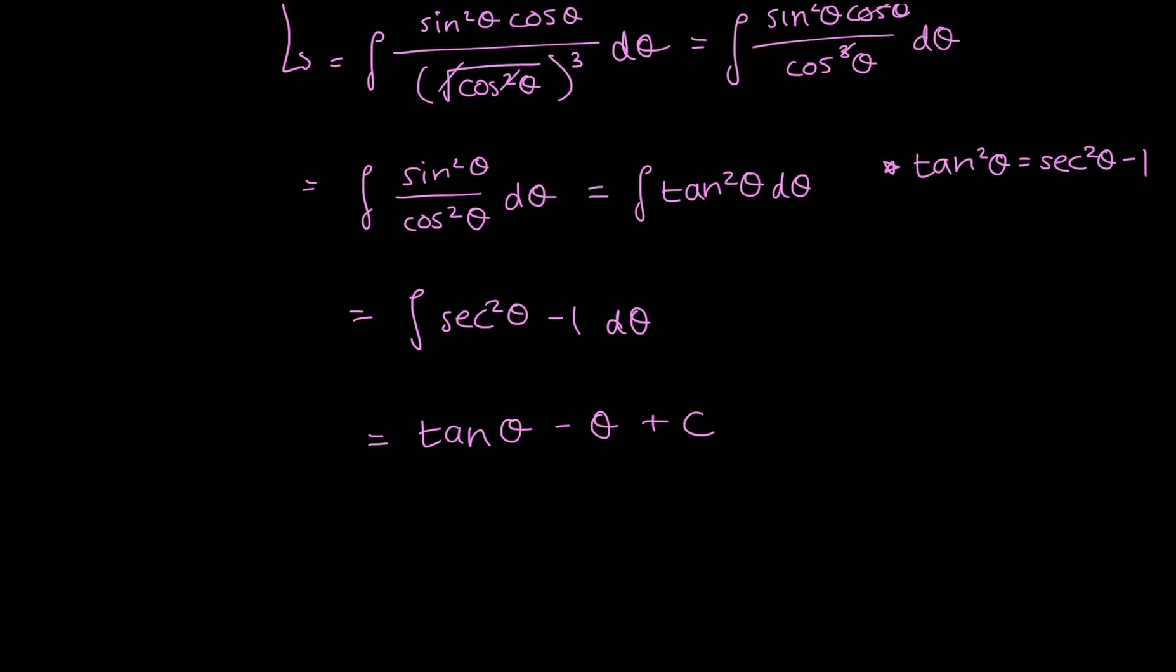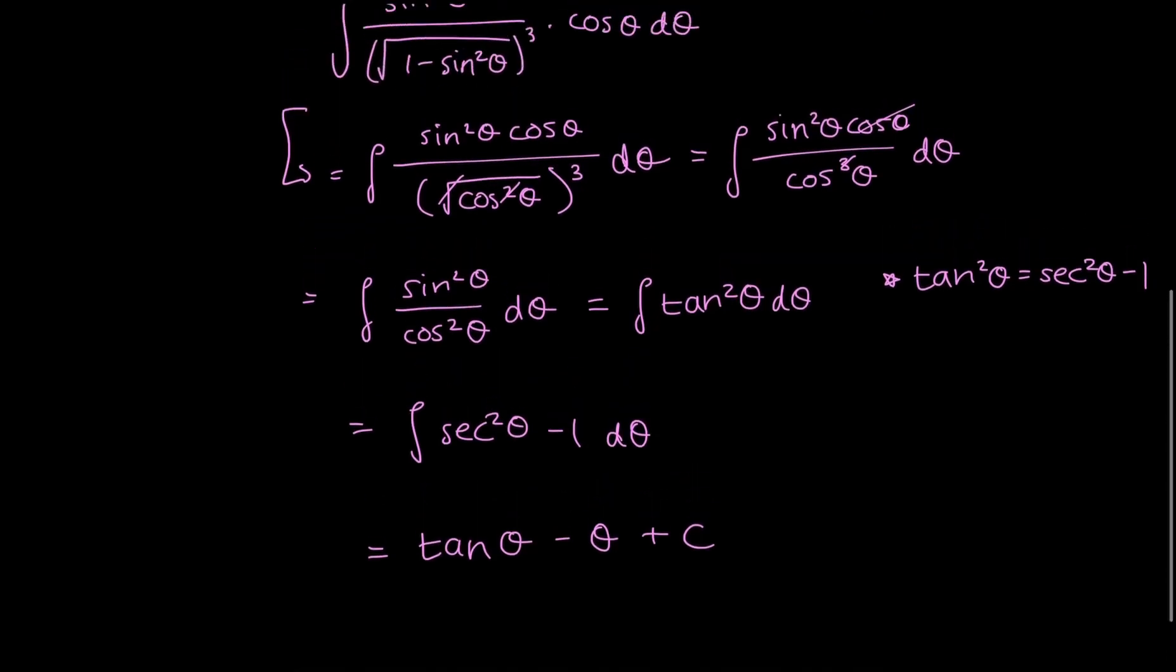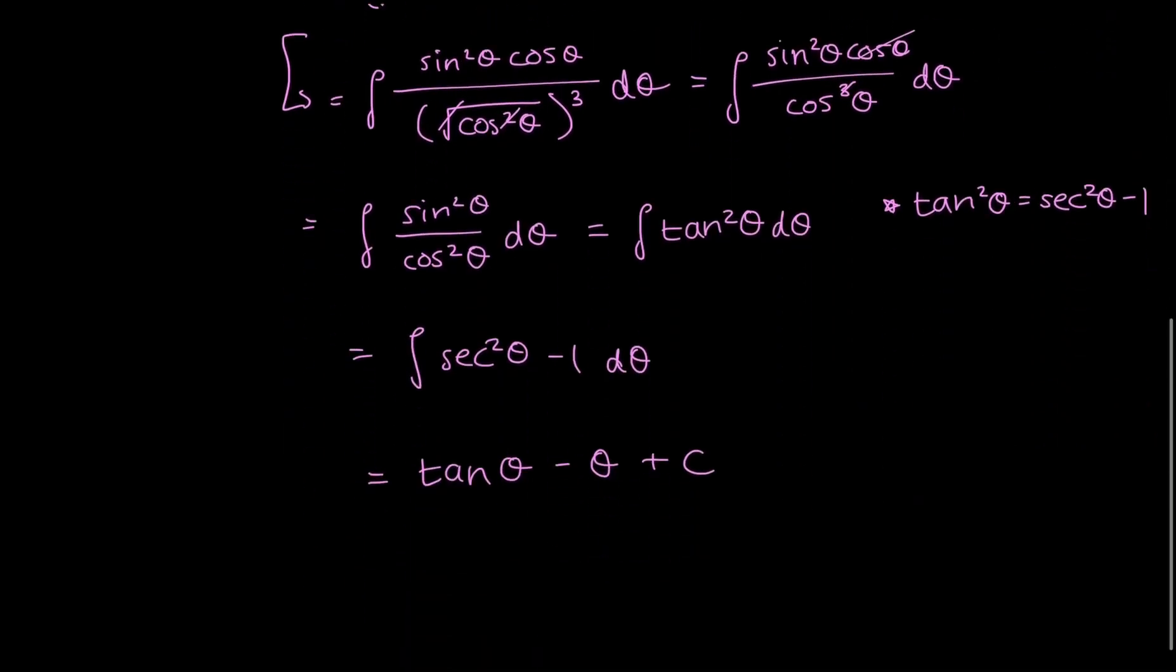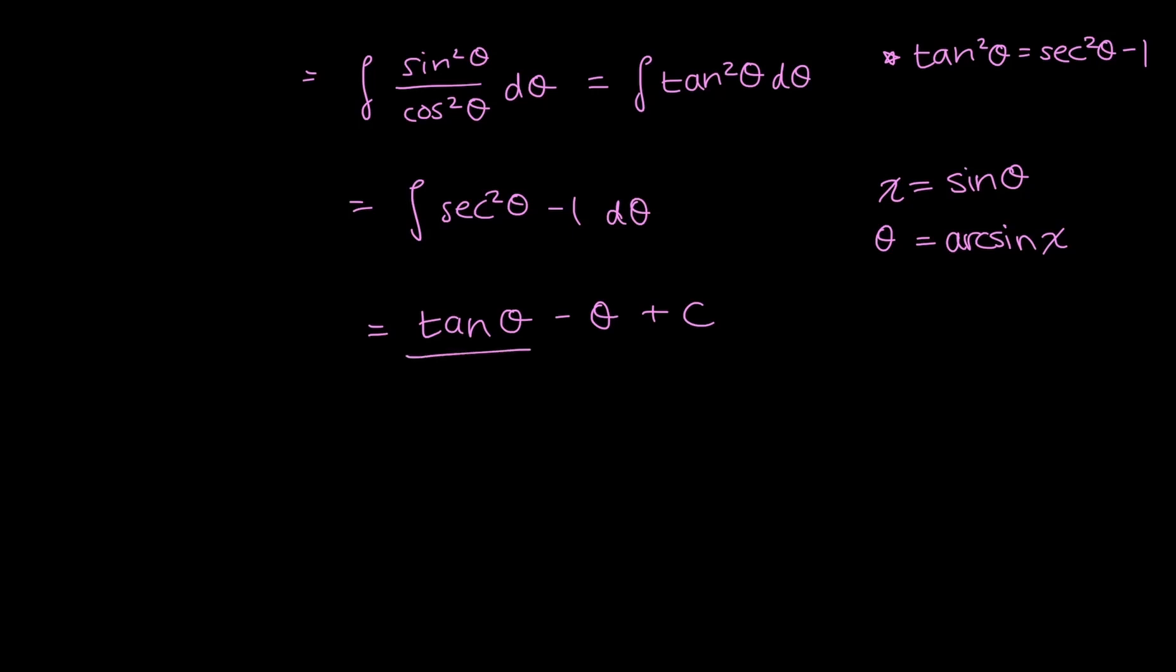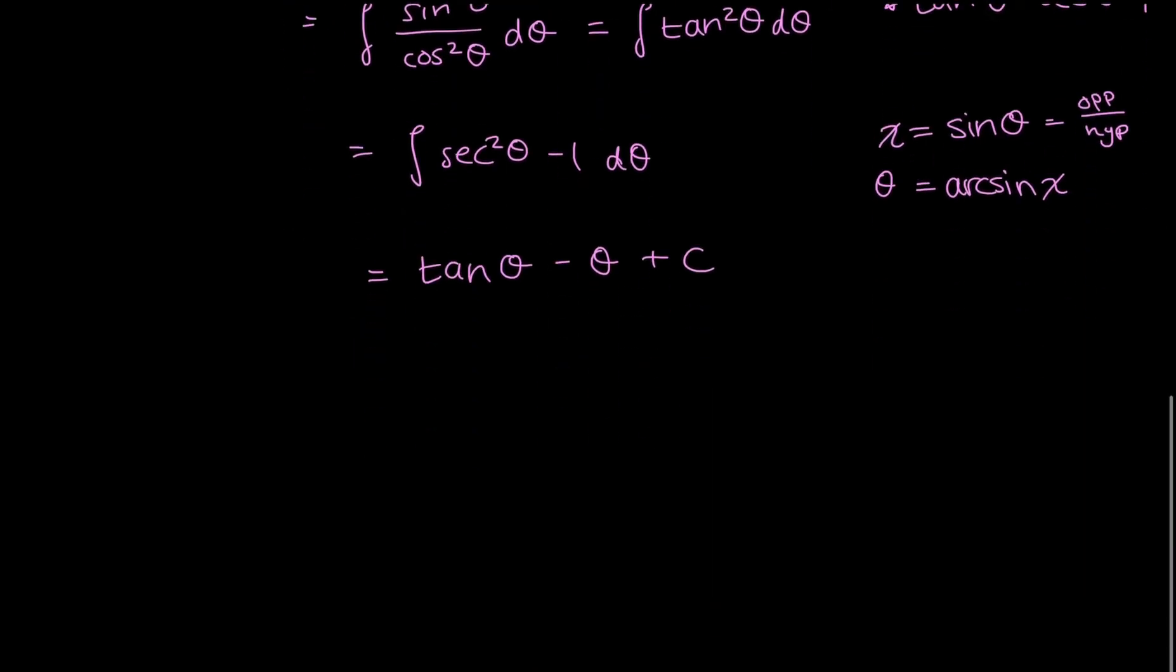So to rewrite this in terms of x, I need to go back to my original substitution. I said that x equals sine theta. That means that just doing the inverse, theta must be equal to arc sine x. Now to find my tan theta, this just requires a tiny bit more work, using the definition that sine theta equals the opposite over the hypotenuse. So knowing this, I can create a triangle and obtain what my tan theta is equal to.